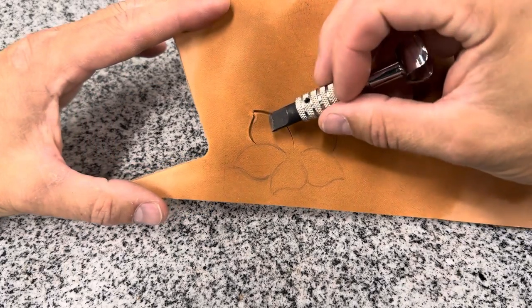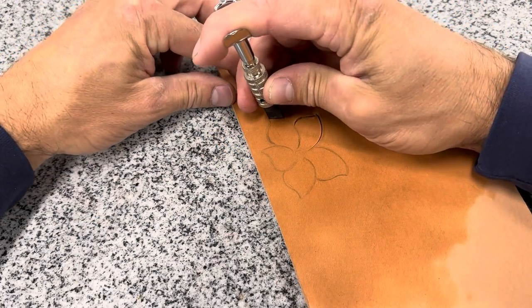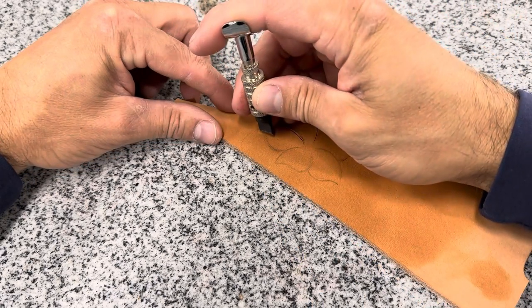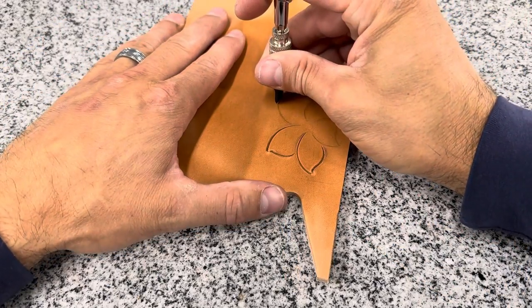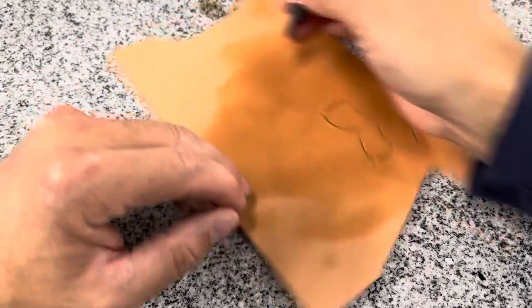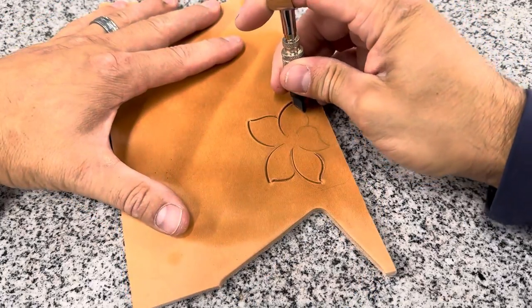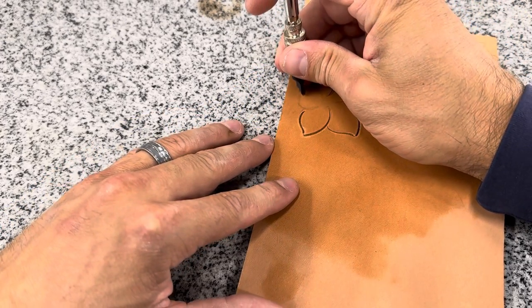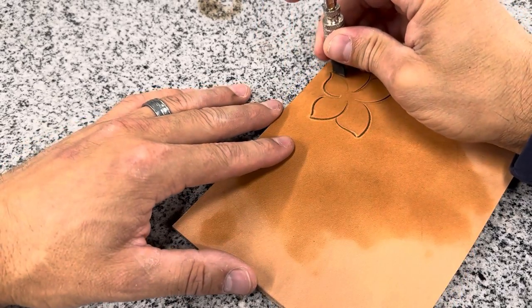Now one thing to note I did not connect these points up here we're going to do another video that goes into depth on that kind of the whys of that but we're going to make it look like it connects when we come back with our bevel. First things first we'll get these outside lines cut in. Notice I'm turning that leather always pulling these cuts towards me. For me that gives me a lot more control on this swivel knife. Keeping those cuts where we want them to be.